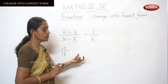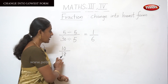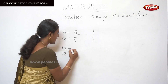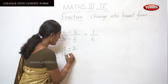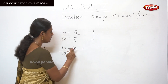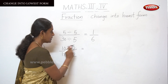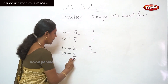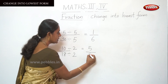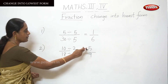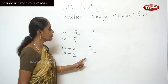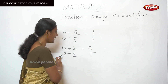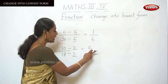We are going to find the lowest form of this fraction. Take the same divisor number — divide by 2, and the denominator also divided by 2. By saying the 2 times table: 5 twos are 10, so the answer is 5. And 18 divided by 2 is 9. So the lowest form of 10 by 18 is 5 by 9.